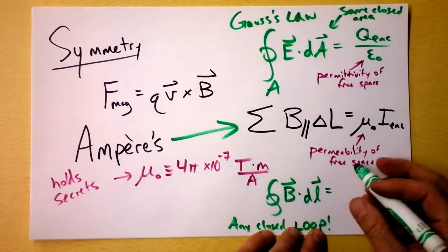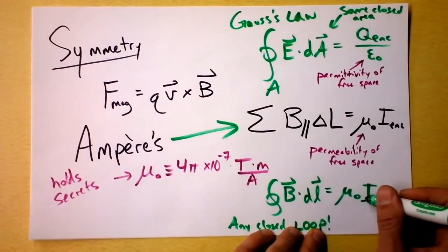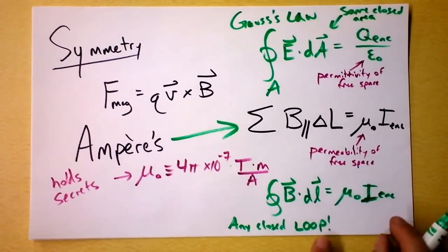And this is going to be, well, you see it right now, it's just mu naught times the enclosed current. So my point is, if you go around in a loop, like, let's make a really simple example.